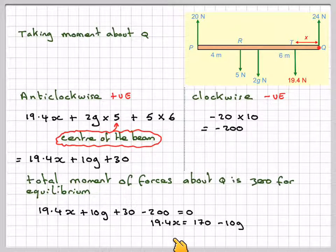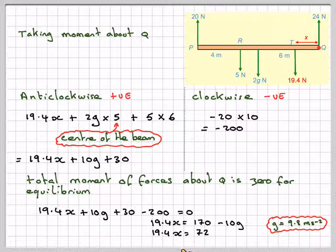Simplifying that, we're going to get 19.4X is equal to 30 minus 200 is minus 170, take to the other side is 170, minus 10G. G is 9.8, so 19.4X is equal to 72. X is equal to 3.71 metres, correct to three significant figures.